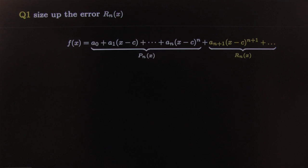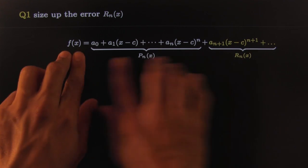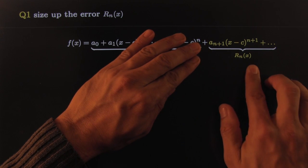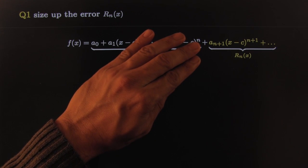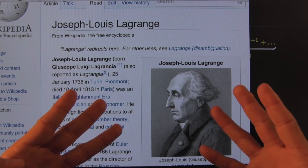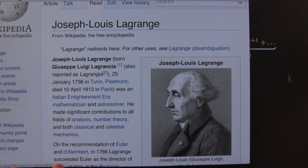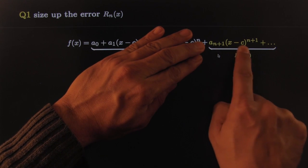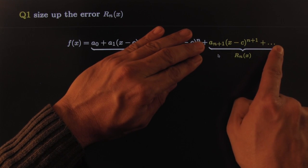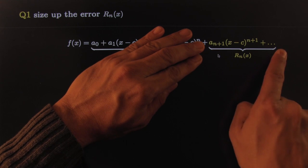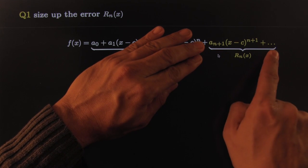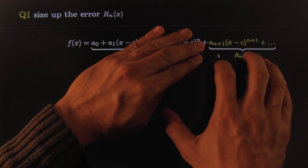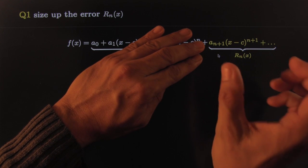Alright, so let's try to size up the error. Start off with a generic statement here. You got a function, you got the nth degree polynomial approximation, and you've got what's left over. What this guy says, amazingly brilliant, says hey I've got a way to take that entire remainder, even though it's really really really really long, infinitely long. I mean, there's more terms here than our atoms in the universe. That's how long it is.